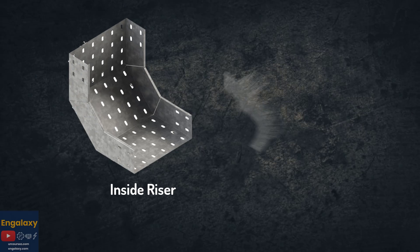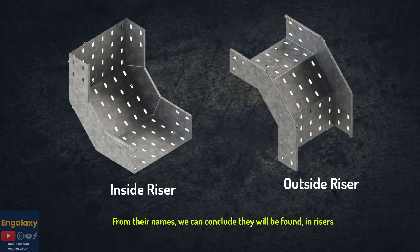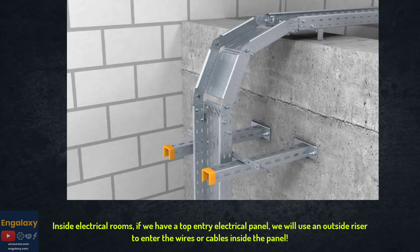Inside riser and outside riser. From their names, we can conclude they are used to change the direction of the cable trays from vertical direction to horizontal direction, and vice versa. As an example of their applications: inside electrical rooms, if we have a top entry electrical panel, we will use an outside riser to enter the wires or cables inside the panel.